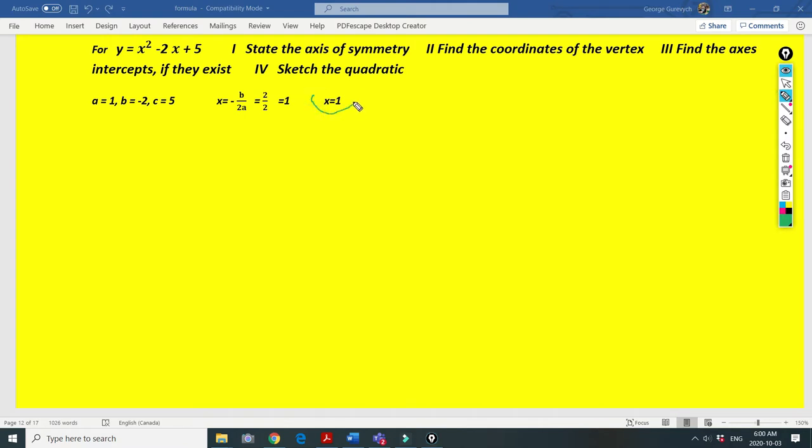This is our axis of symmetry and now we have to say that our a is positive. It means that shape is concave up.